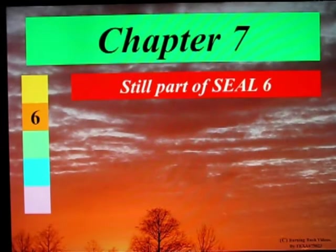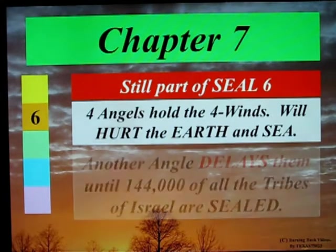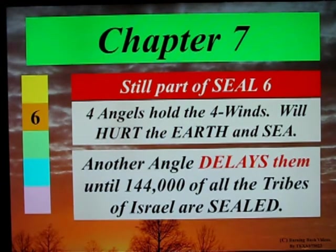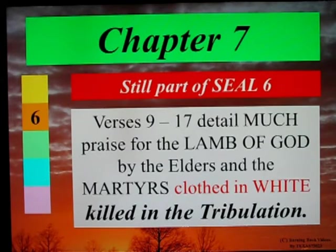Still part of seal 6 in Chapter 7: four angels hold the four winds, and they will hurt the earth and sea. But first, another angel delays them until 144,000 of all the tribes of Israel are sealed. Verses 9 through 17 detail much praise for the Lamb of God by the elders and the martyrs clothed in white, killed during the tribulation.